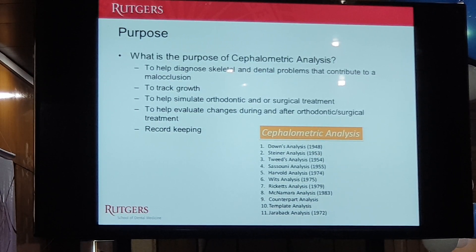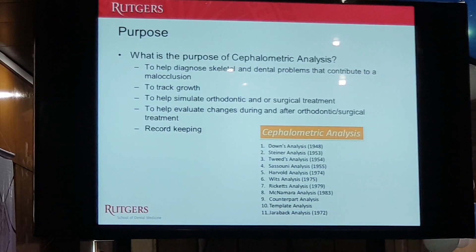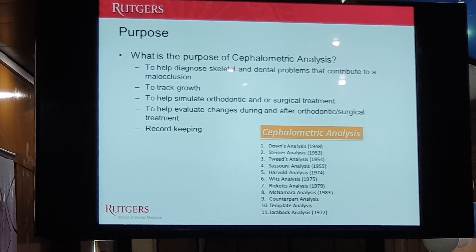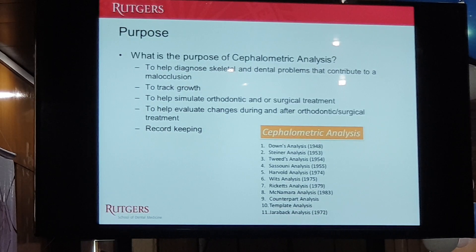When I was training, I was confused because there were so many different analyses out there. The ones most commonly used in the States are the Steiner analysis and the McNamara analysis. As a surgeon, you have to find what makes sense to you. I use a hybrid of the Steiner and McNamara — I'll show you that in a few minutes. I know we also have Dr. Mukherjee from Rutgers here, who's an orthodontist and will talk more about different analyses from the orthodontic perspective.